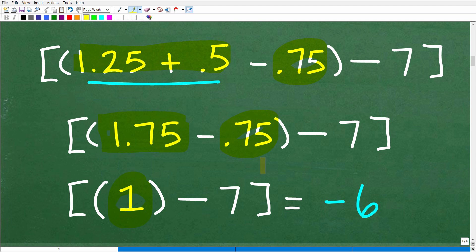So 1 minus 7, the only thing left to do here is 1 minus 7, which is the same thing as 1 plus a negative 7, and of course the answer here is negative 6.